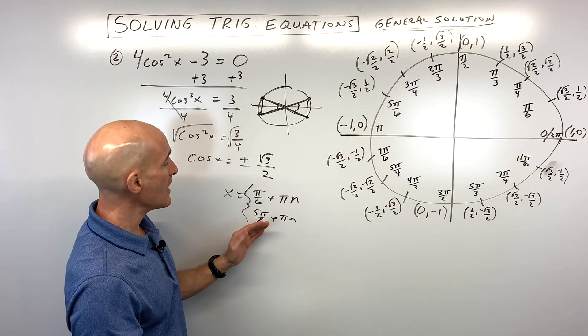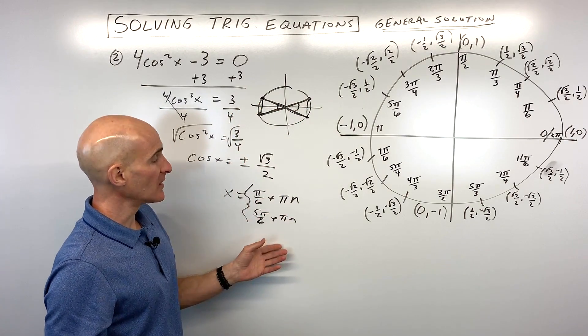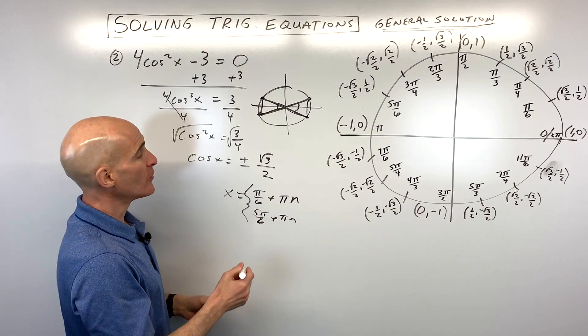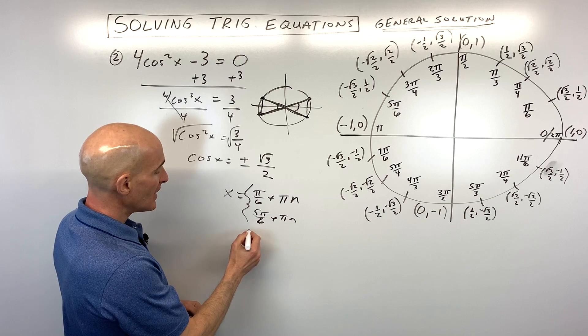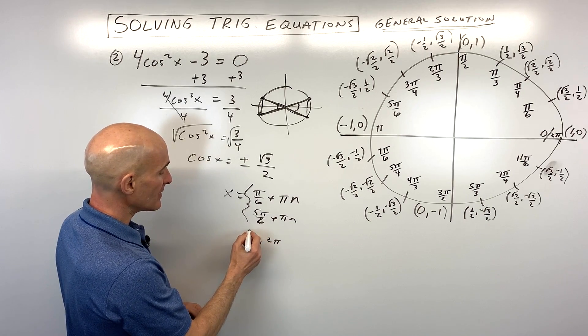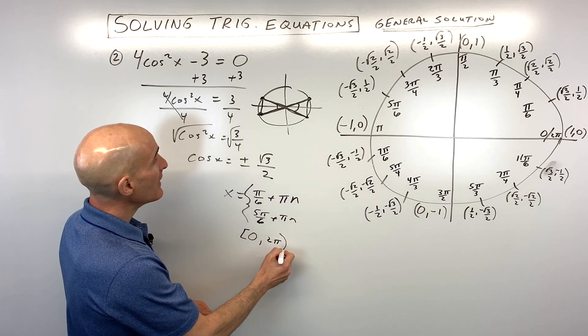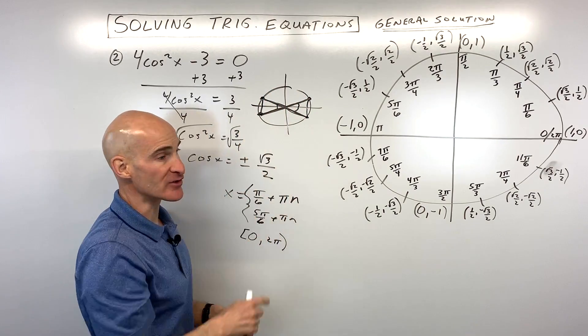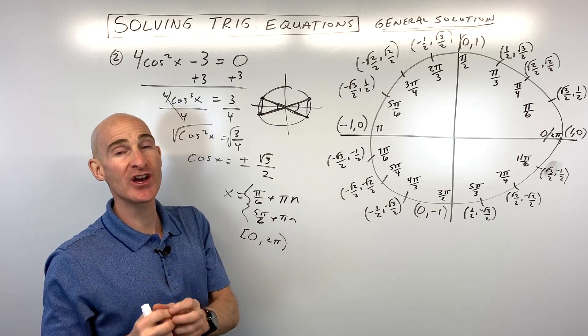It can't be a half, a third, etc. So we were able to group these together to make it a little bit more compact. This would be our general solution. If it just said find all the solutions between 0 to 2 pi, then you would just say pi over 6, 5 pi over 6, 7 pi over 6, and 11 pi over 6. But what we're focusing on here is writing a general solution.